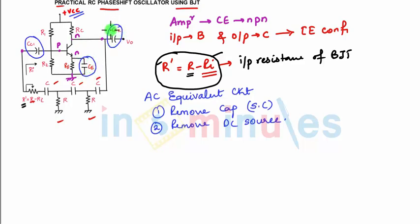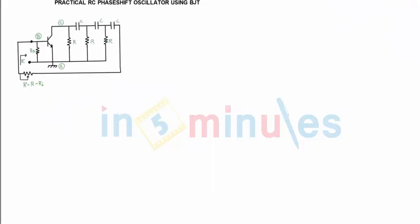Just for this, we are doing for the amplifier and not for the feedback network. So we are drawing AC equivalent circuit for the amplifier.